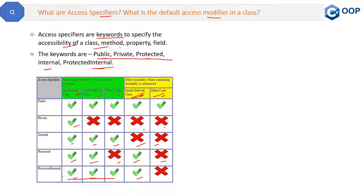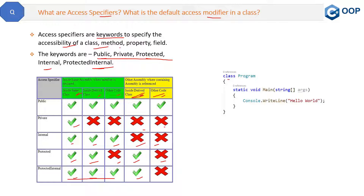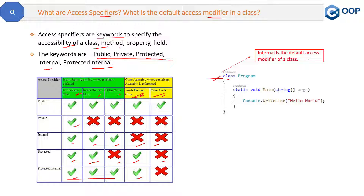The next part of the question is: what is the default access modifier in a class? Again, access specifier and access modifier are the same thing. In the code, if we have written a class but missed the access specifier, what will the .NET framework apply by default? The answer is internal. Internal is the default access specifier or modifier of a class. I hope you understand it — if you have any queries, please let me know in the comment section.